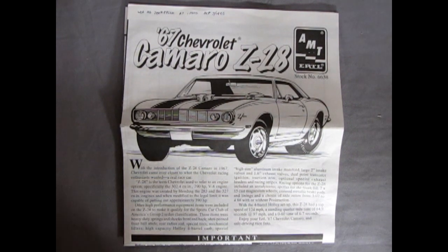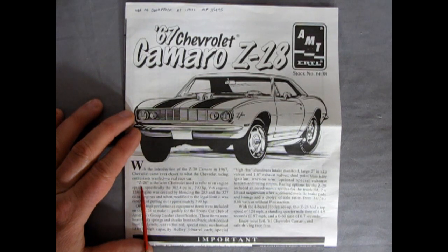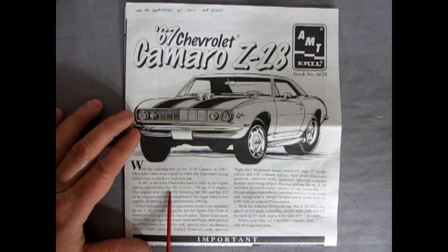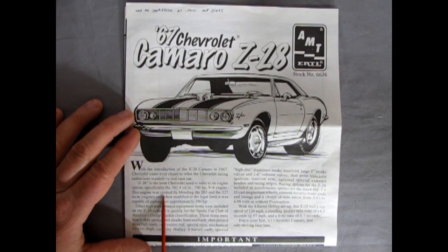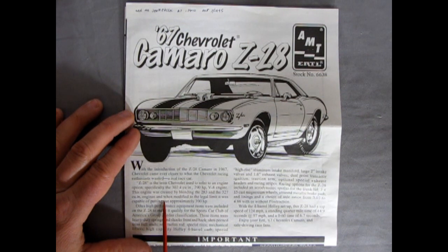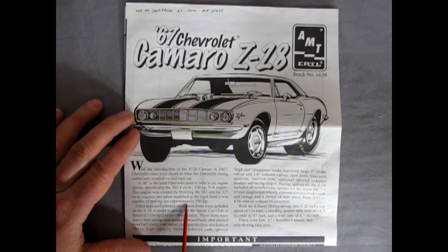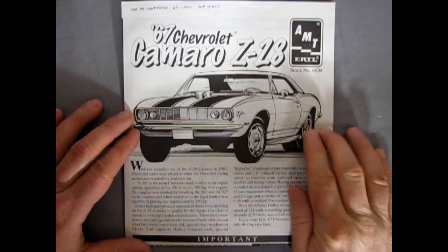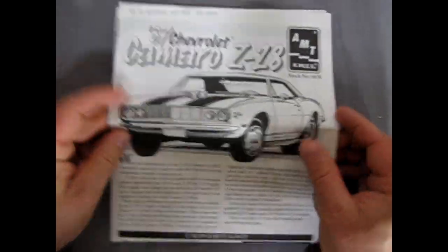And here we have our instruction sheet for our 67 Camaro Z28, and of course with all our write-up down here. Z28 is the term Chevrolet used to refer to an engine option, specifically the 302.4 cubic inch 290 horsepower V8 engine. The engine was created by blending the 283 and the 327 cubic inch engines, and when modified to the legal limit it was capable of putting out approximately 390 horsepower. Very cool. Very Camaro. But anyway.